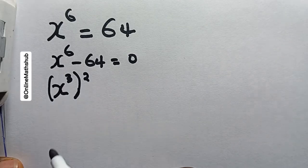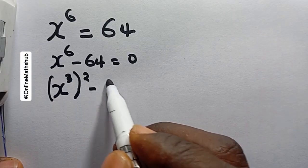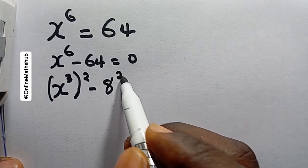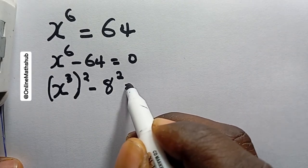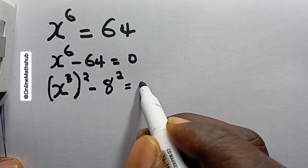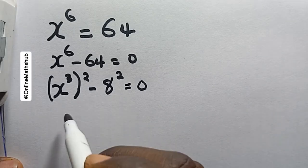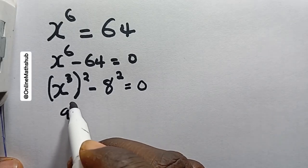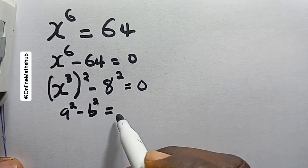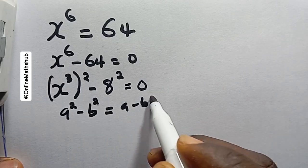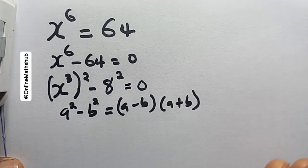2 times 3 gives me 6, so that doesn't change anything. Then I can write 64 as 8 to the power of 2. The idea is I actually want to use the rule of difference of two squares to evaluate. I've got one square here and another one.